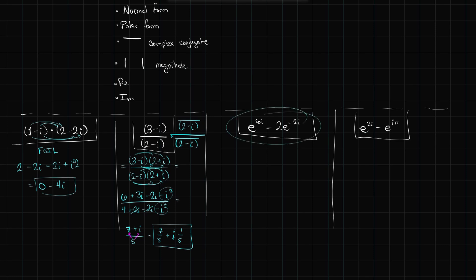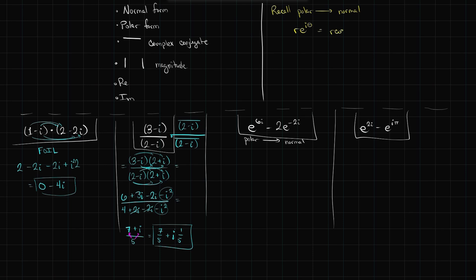For the third case, the expression is currently in polar form, so we need to go from polar to normal first. Recall: r·e^(iθ) = r·cos θ + i·r·sin θ. For the opposite direction, x + iy = √(x² + y²)·e^(i·arctan(y/x)). We'll focus on the polar-to-normal direction for this problem.